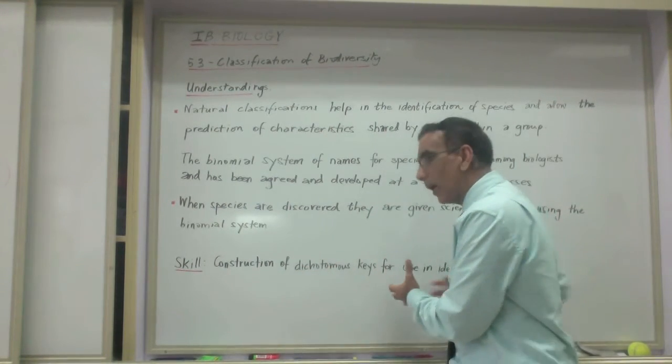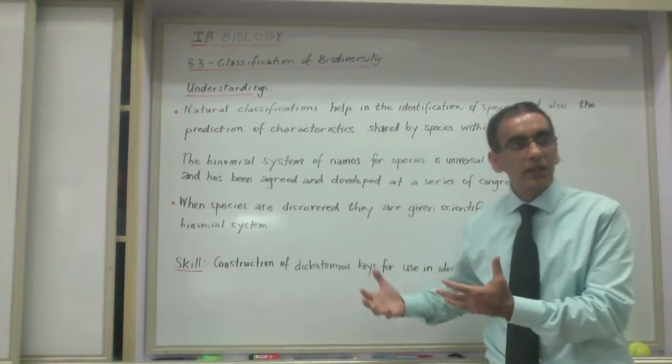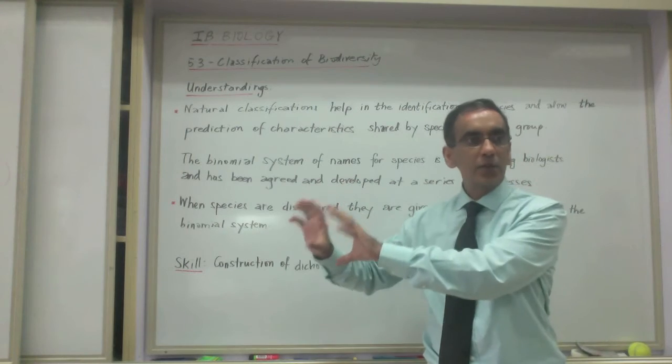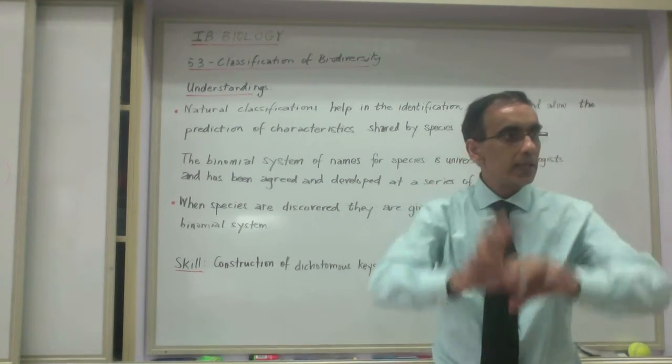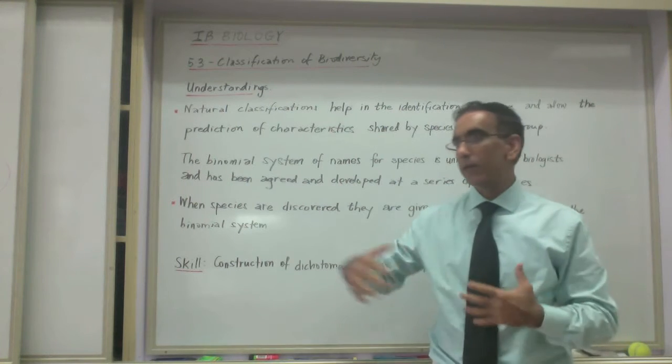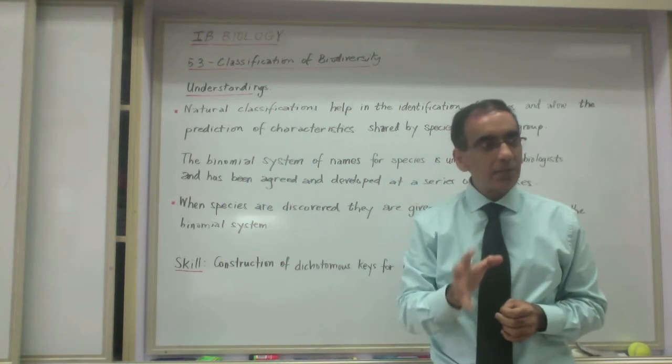But in the same way, this scientific way that we're about to look at using the dichotomous key, constructing it and using it, could be on its way out if we can take a picture of any specimen, put it onto a database and then get immediate feedback on its biological name and all the stuff that we want to know about it.